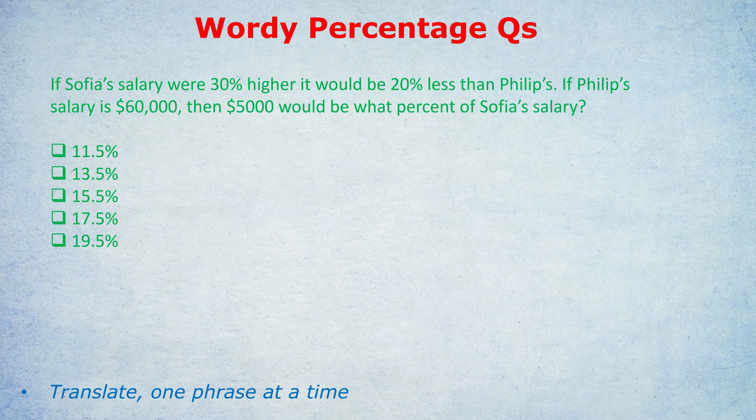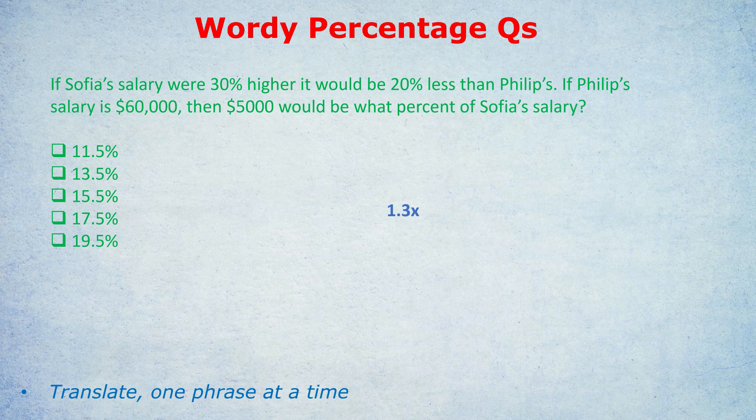If Sophia's salary were 30% higher, it would be 20% less than Philip's. Before we even keep reading, let's just translate some of these phrases. If Sophia's salary were 30% higher, how do you increase something by 30%? You multiply by 1.3. Do we know Sophia's salary? No. So we're going to use an X or maybe an S, but an X is clearer, I think. An S kind of looks like a five sometimes. Anyway, so we have 1.3X. Then the phrase says, it would be. Now remember, it would be means equals.